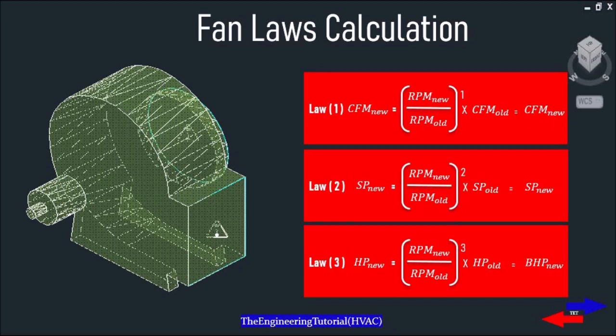The second fan law is used to determine the static pressure as the speed of the fan changes. A change in fan speed has a significant impact on pressure, and that change is calculated according to the square of the speed ratio. Fan Law 2: Static Pressure new equals (RPM new divided by RPM old) squared, multiplied by Static Pressure old, which gives us Static Pressure new.